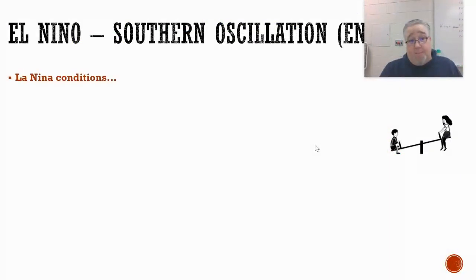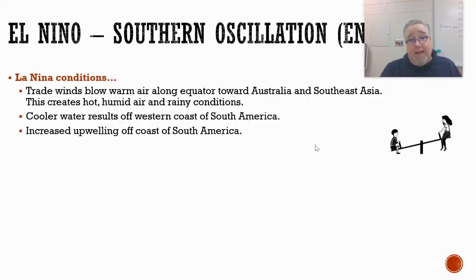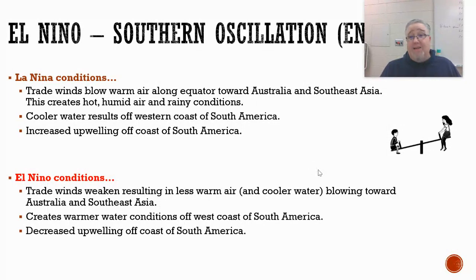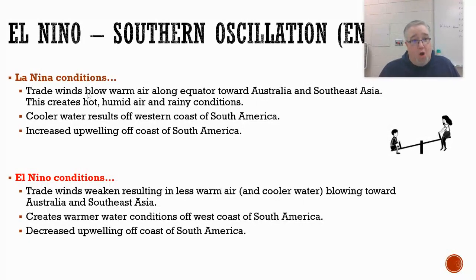Here's a summary of La Niña and El Niño. La Niña: trade winds blow warm air along the equator but they're strong; you get cooler water off South America and an increased upwelling off South America. El Niño is just the opposite. I always tell students — if you memorize one, just remember the other one is the opposite. You do need to know what conditions are causing them to happen, but if you know one, you automatically know the other.